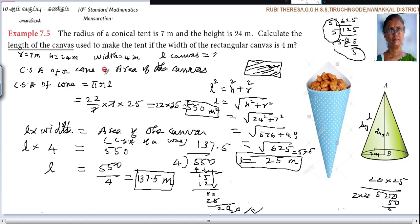Do you follow? First you should know the basic concept that area of the canvas is the curved surface area of the cone. Then only you will be able to find it out. L is not given, so with the help of H and R you are finding out L and substituting, finding out the curved surface area of the cone. With the help of the curved surface area of the cone, you are finding out the length of the canvas because this is area of the canvas.